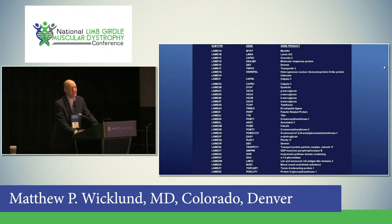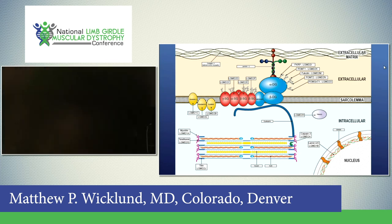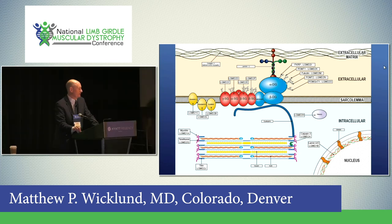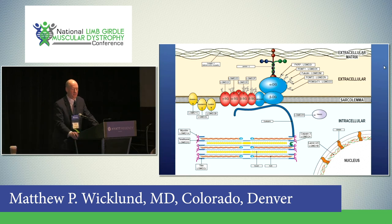This is just a listing of the named and numbered subtypes in the old nomenclature. Another way of looking at the limb girdle muscular dystrophies: if you affect a muscle fiber anywhere — within the fiber, on the surface, or even outside and around the fiber — you can develop a limb girdle pattern of weakness.